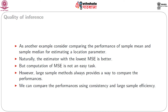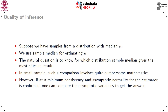As another example, consider comparing the performance of sample mean and sample median for estimating a location parameter. Naturally, the estimator with the lowest MSE is better, but computation of MSE is not an easy task. However, large sample methods always provide a way to compare performances. We can compare the performances using consistency and large sample efficiency. Consider a further example: suppose we have samples from a distribution with median mu, and we use the sample median for estimating mu. The natural question is to know for which distribution the sample median gives the most efficient result. In small samples, such a comparison involves quite cumbersome mathematics. However, if at a minimum consistency and asymptotic normality for the estimator are confirmed, one can compare the asymptotic variances to get the answer.